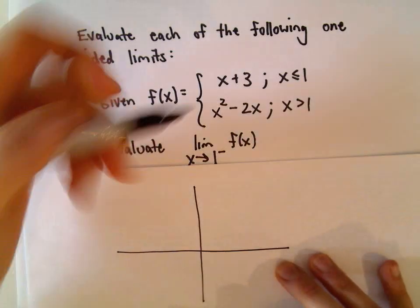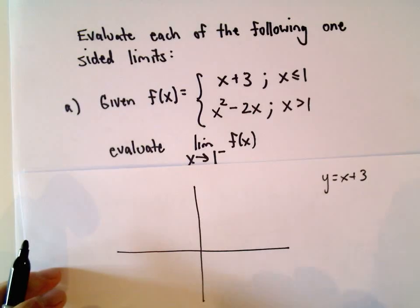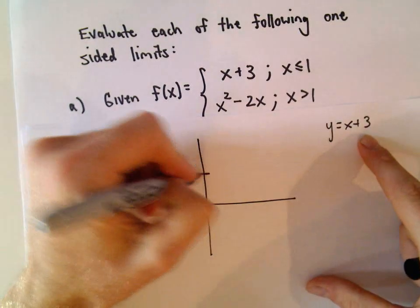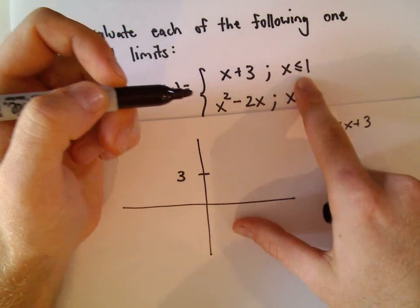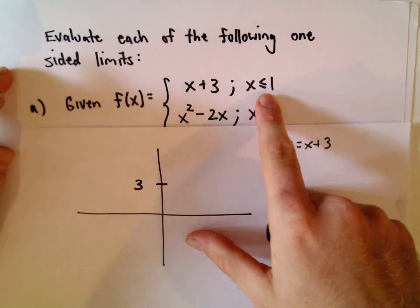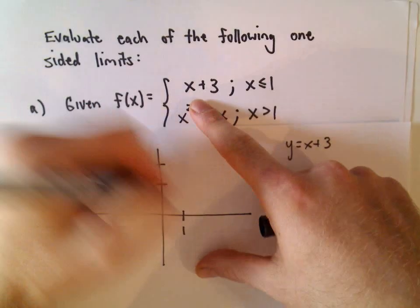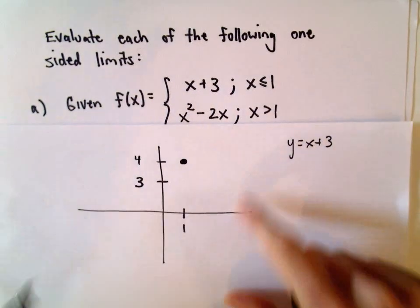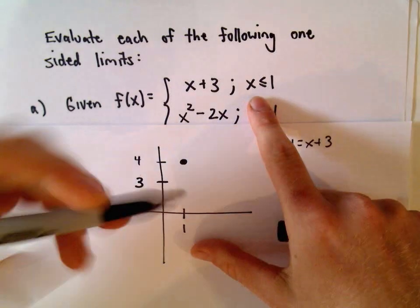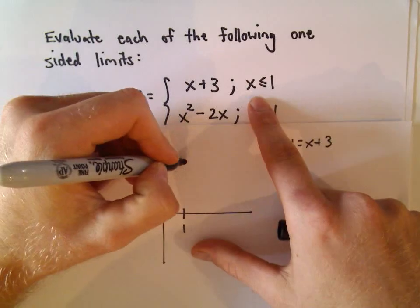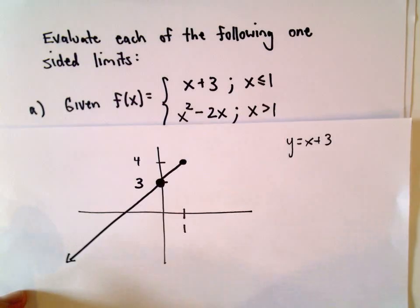Let's do a little rough sketch. If you think about y equals x plus 3, that's just going to be a line with a y-intercept of 3 and a slope of 1. But notice it only applies for x less than or equal to 1. If we plug in x equals 1, we get a y value of 4, so there's a point at (1, 4). It's only valid for x coordinates less than or equal to 1, so we only get the left half of this line.